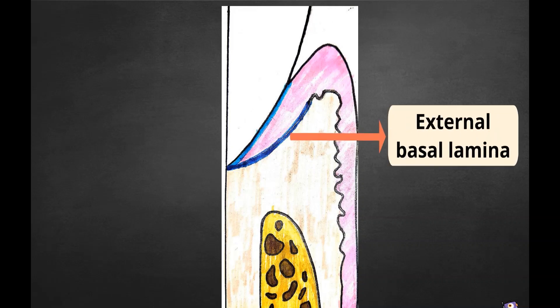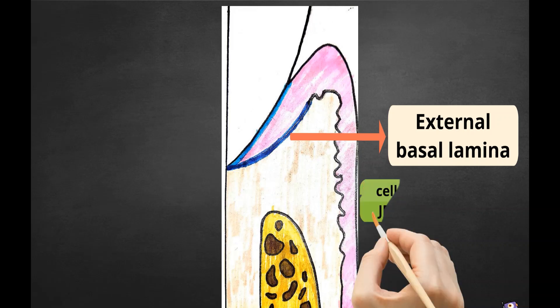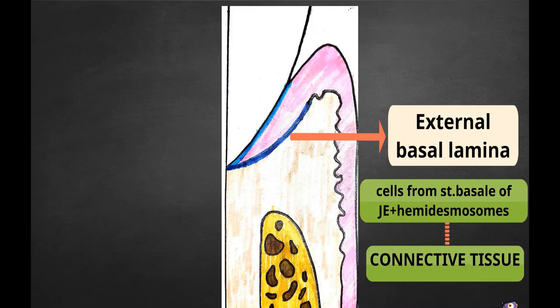Similarly, junctional epithelium gets attached to gingival connective tissue by means of an external basal lamina. Cells from stratum basale of junctional epithelium with the help of hemidesmosomes attach to the connective tissue.